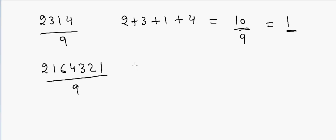In that case, 2 + 1 + 6 + 4 + 3 + 2 + 1. The sum gives us 19. So we have 19 divided by 9. If you divide 19 by 9, you'll get a remainder of 1. So again, if you divide this number by 9, your remainder will be 1.